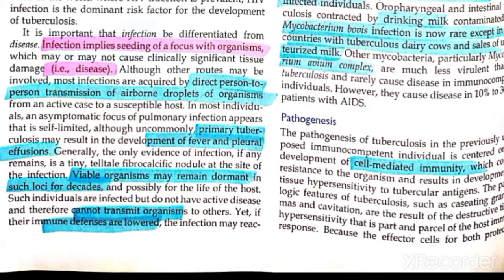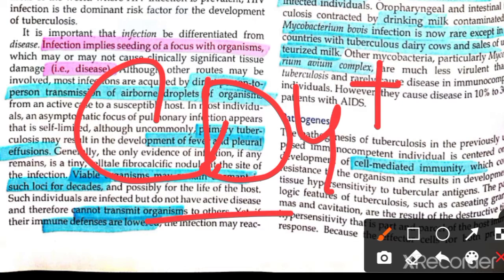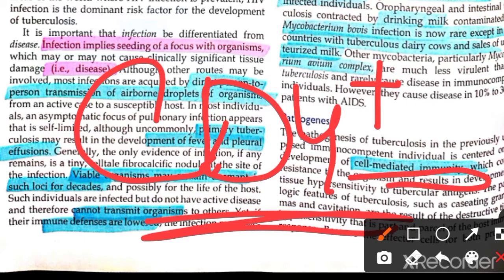Regarding pathogenesis, the main role is played by CD4-positive T cells. HIV or AIDS depletes CD4-positive T cells. The main immunity against TB is provided by CD4-positive T cells — these are the key players in cell-mediated immunity against TB.